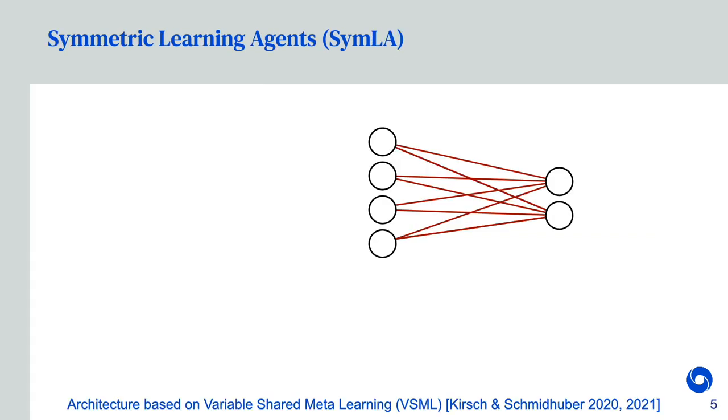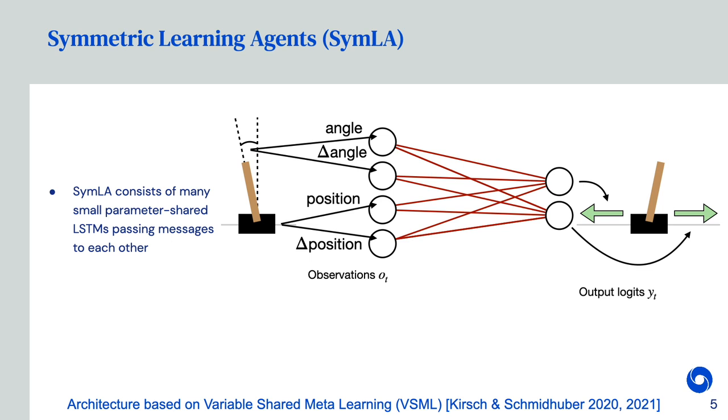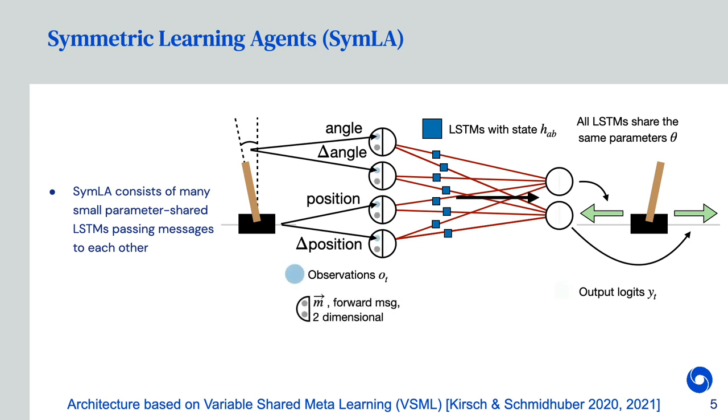We call our approach symmetric learning agents. SymLA consists of many small parameter-shared LSTMs passing messages to each other. We are given a neural network that is fed observations and produces actions. In place of standard weights, we use parameter-shared LSTMs. These LSTMs pass messages along the edges of this neural network. The messages are multidimensional and are passed in the forward direction, but also in the backward direction, to allow for credit assignment throughout the network based on the reward.